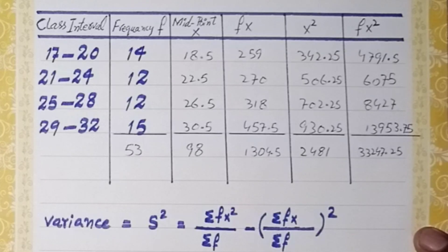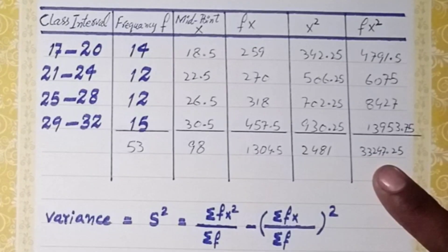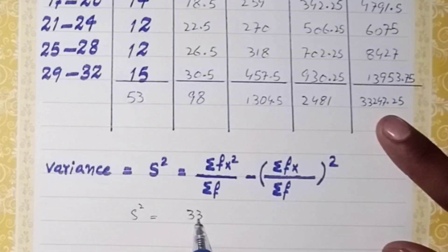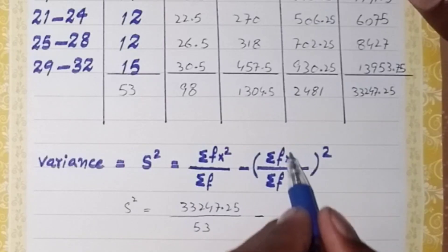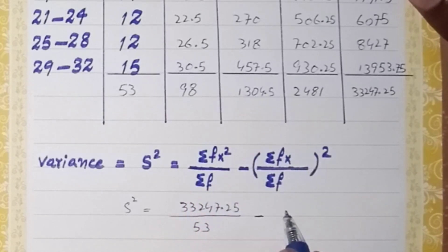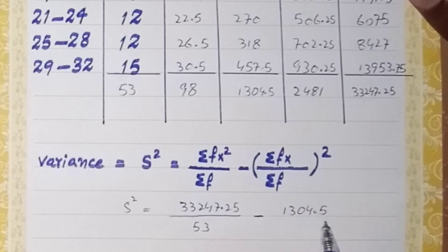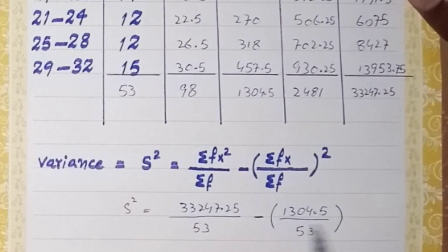We put all these values into the variance formula. Sigma fx² is 33,247.25 divided by sigma f which is 53, minus the whole square of sigma fx which is 1304.5 divided by sigma f which is 53.